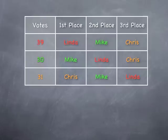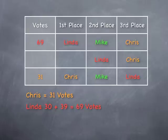We're going to eliminate the lowest ranked candidate, and that would be Mike. Mike had previously won the election and now he is eliminated. Those votes now get transferred to Linda. Chris has 31 votes, Linda now has 69 votes, and Linda is the winner.